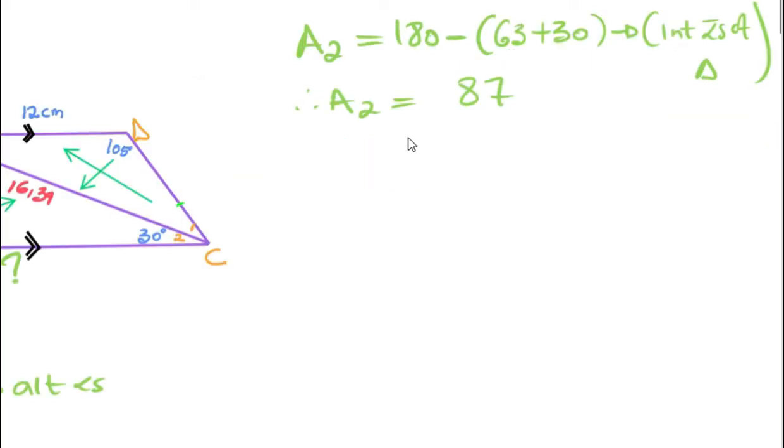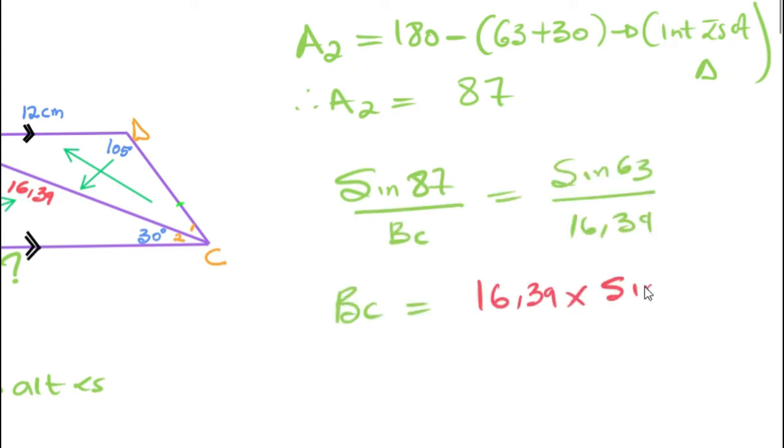Then with this, we can now do sine rule. And your value for BC would be 18.37.